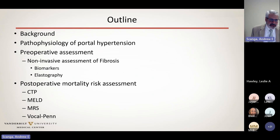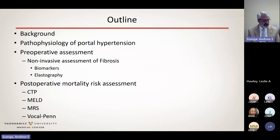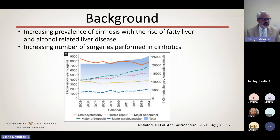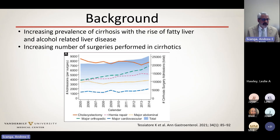Brief outline: I'll give background on the scope of the problem, go over the pathophysiology of portal hypertension, and then cover preoperative assessment including noninvasive fibrosis assessment. I'll spend a good portion on postoperative mortality risk assessment. There is an increasing prevalence of cirrhosis due to the rise of fatty liver disease and alcohol-related liver disease, and as a result there's been an increased number of surgeries performed in cirrhotics.